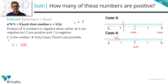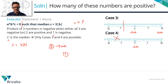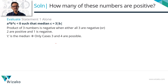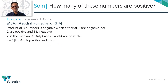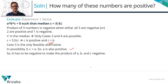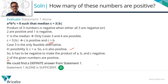Since the product ABC must be negative and A and C are both positive, B must be negative. We get a conclusive answer: two of these numbers (A and C) are positive and one (B) is negative. Statement 1 alone is sufficient. We can eliminate answer choices B, C, and E — narrowing down to A or D.